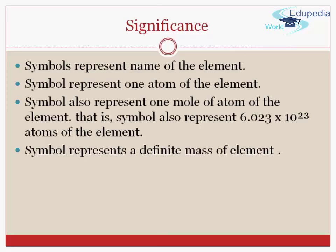For example, symbol C represents one atom of carbon element. That is, symbol also represents 6.023 × 10²³ atoms of the element. That is, symbol C also represents one mole of carbon atom. That is, symbol C also represents 6.023 × 10²³ atoms of carbon.